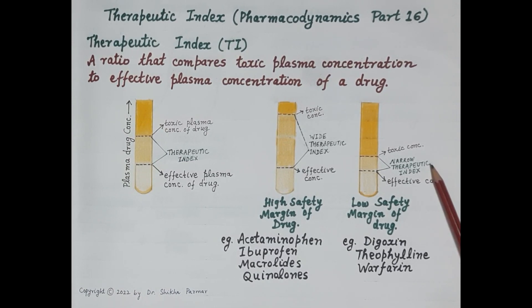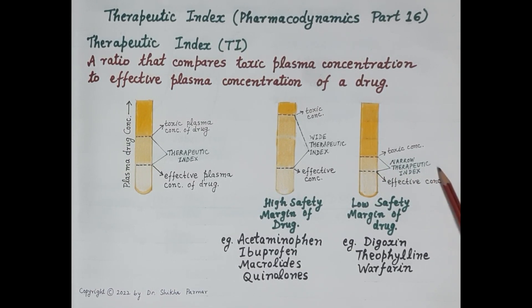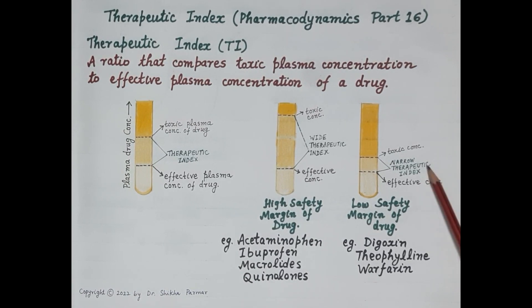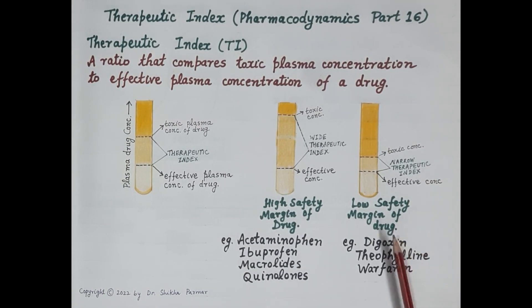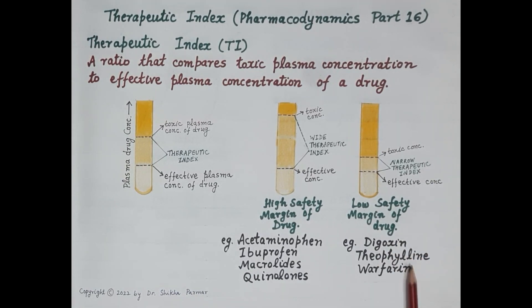The therapeutic index determines the safety margin of a drug. In the case of a narrow therapeutic index, the drug once administered should be monitored closely for signs of drug toxicity, which can be immediately treated. These drugs exhibit a low safety margin. Examples of drugs with a narrow therapeutic index include digoxin, theophylline, and warfarin.